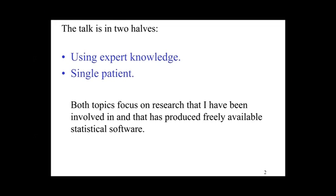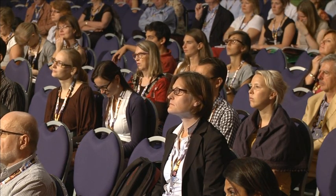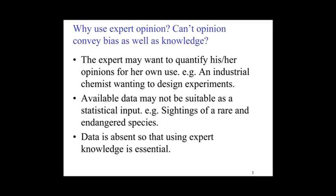First we're talking about expert opinion and why you might want to quantify it. A lot of the time I'm a Bayesian statistician, which means we have a full mechanism for trying to use expert knowledge. In Bayesian statistics you have a prior distribution, which should contain all the available information before we gather our data. You then gather the data and combine the two to form a posterior distribution, which you use to form inferences and make judgments, because it contains both the prior information and the information the data has supplied.